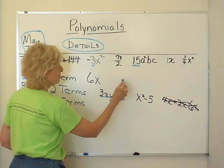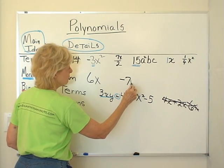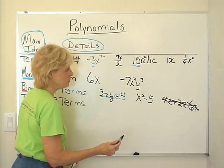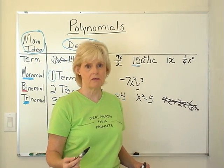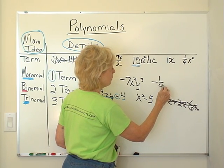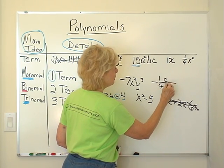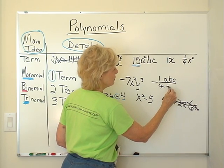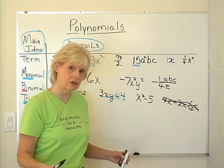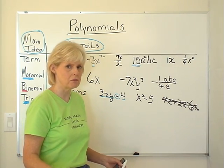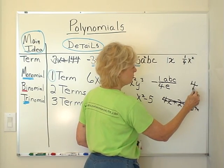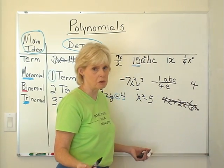So 6x would be an example of one term or of a monomial. So another monomial could be negative 7x squared y to the third. See, it can be complicated. It can have negatives. It can have fractions. Let's say we've got negative 1/4, and then we've got a, b, c on top and e on the bottom. Well, it's pretty complicated. But it's only one term. And so it's called a monomial. And the simplest monomial would just be just a number or just a variable by itself.